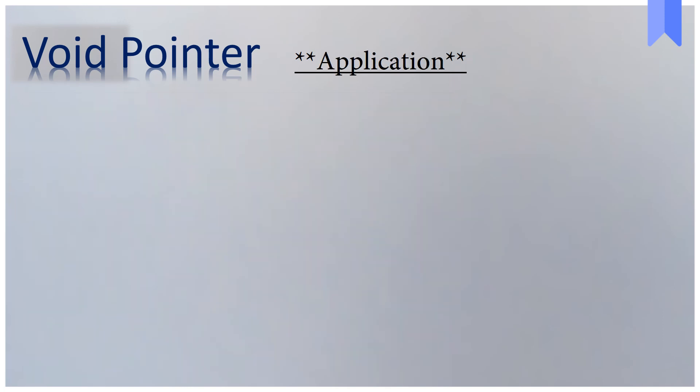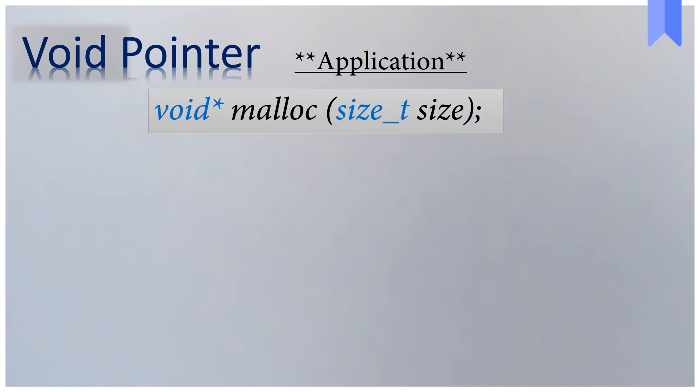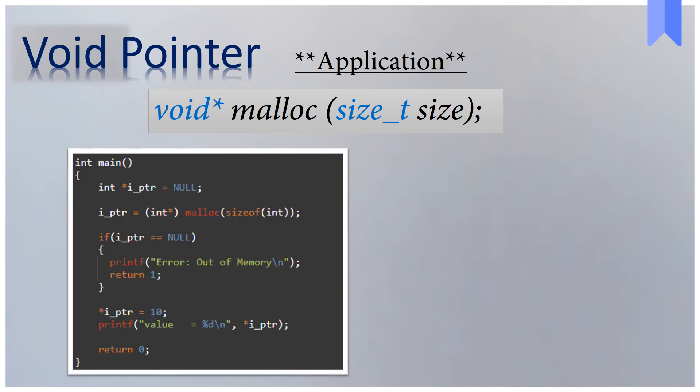Void pointers are very helpful to implement generic library functions. For example, if you see the declaration of the malloc function, it returns a void pointer. In application, during memory allocation, it is our responsibility to typecast the returned pointer type to the appropriate type.